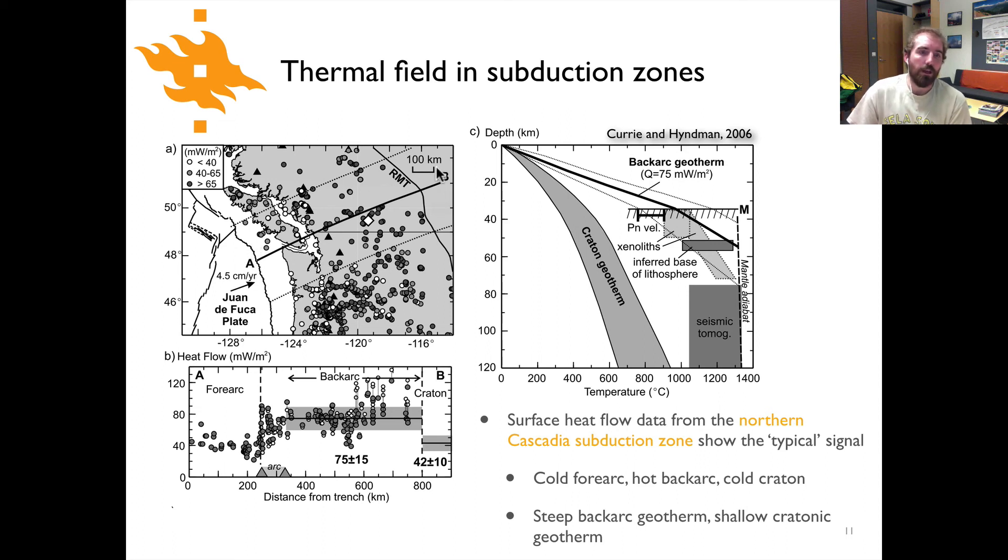In this cross section, there's a whole bunch of different heat flow measurement data that are all projected onto a cross section going perpendicular to the subduction zone. The fore arc is relatively cool; we're basically sitting on top of this down-going plate, so things are cold there. In the back arc, we have the arc volcanoes first, indicated here on the cross section, and then the back arc region where we have relatively high temperatures as a result of induced mantle flow. Once you cross out of the back arc region into the continental craton, you can see the heat flow drops off. We have a relatively cold fore arc, a warm back arc, and a cold craton. The cratonic geotherm is relatively shallow and temperatures increase relatively little with depth compared to the back arc geotherm where temperature increases are much higher.